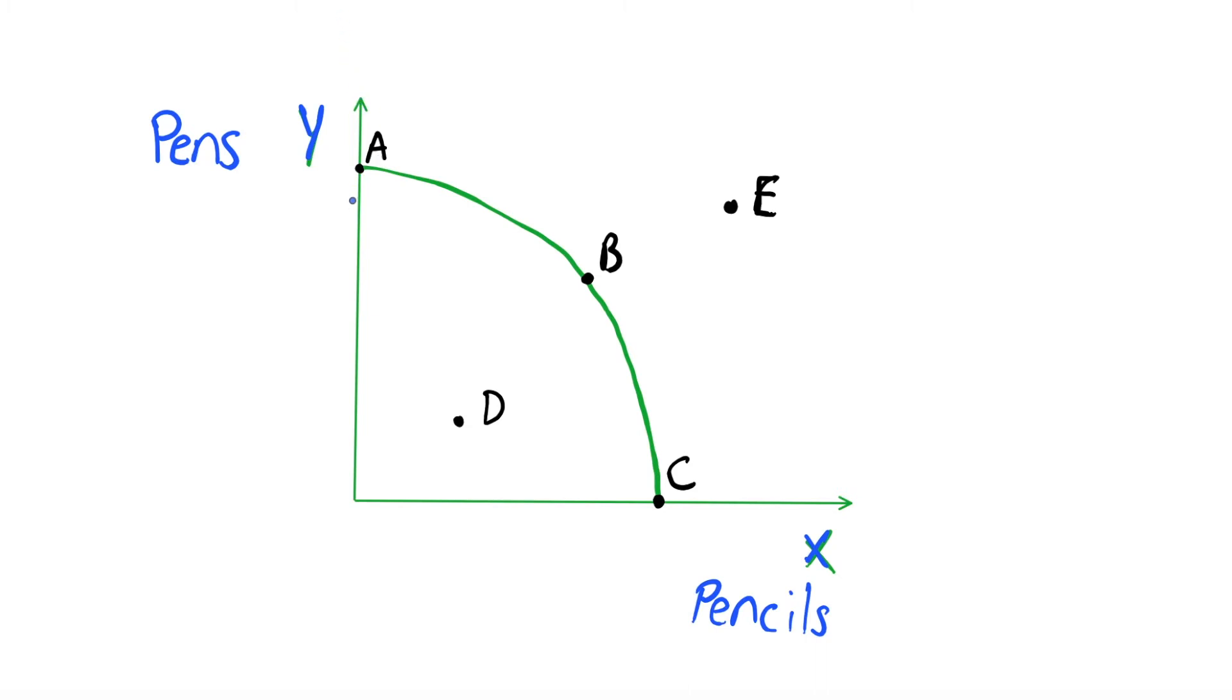But how do we trade them off? So our PPF, as we say, is showing the maximum amount of these goods that we can produce. So if we start by looking at point A here, this is a point that's on our y-axis, and if we consider this point, this says that we can produce this A amount of pens, but we are then only going to be able to produce zero pencils, because we are at this point A.